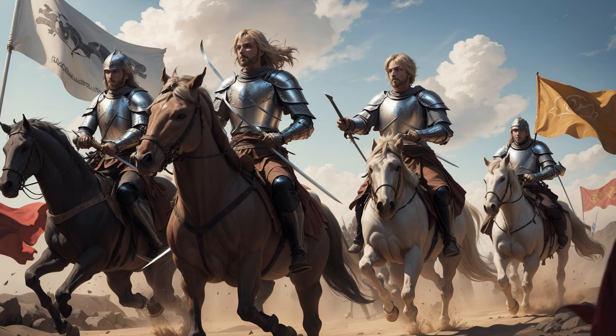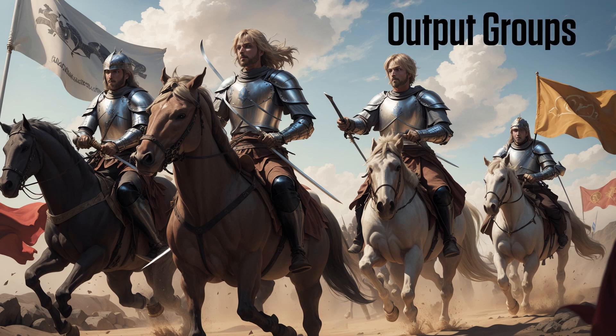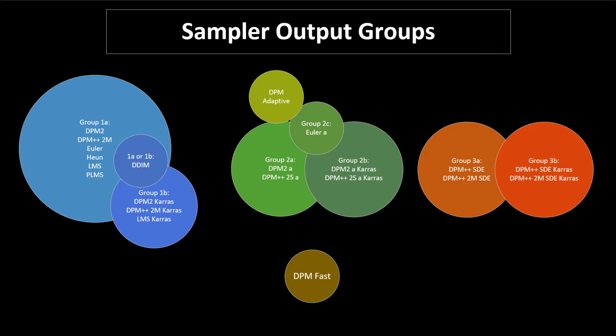Finally, let's talk about the most important parameter for samplers — of course, the output image. Here's a chart showing which clusters of samplers resulted in similar outputs. There are three main groups with two outliers. I'll be discussing each group in detail to help you identify which samplers are best for you.